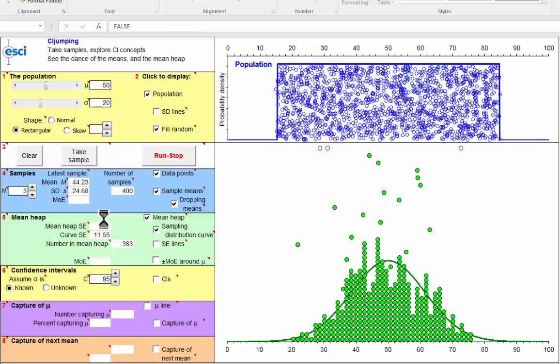We've now taken 400 samples, each of size n equals 3. And our theoretical sampling curve still looks to fit really very well the empirical mean heap, this pile of green dots.